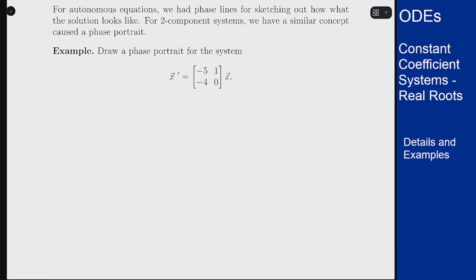I'm going to look at this system here: vector x' is [-5, 1; -4, 0] times x, and we found the general solution to this one previously. The general solution was x(t) = c1[1, 4]e^(-t) + c2[1, 1]e^(-4t).